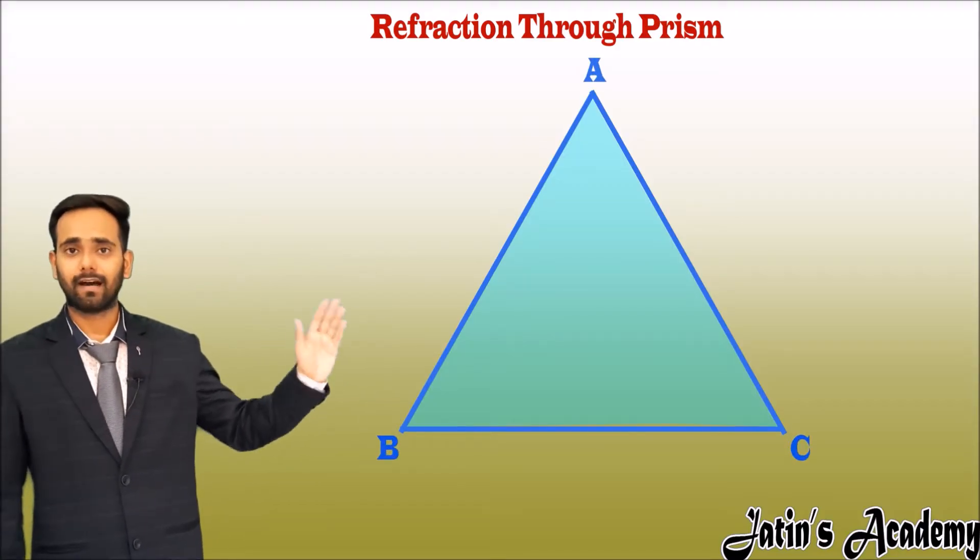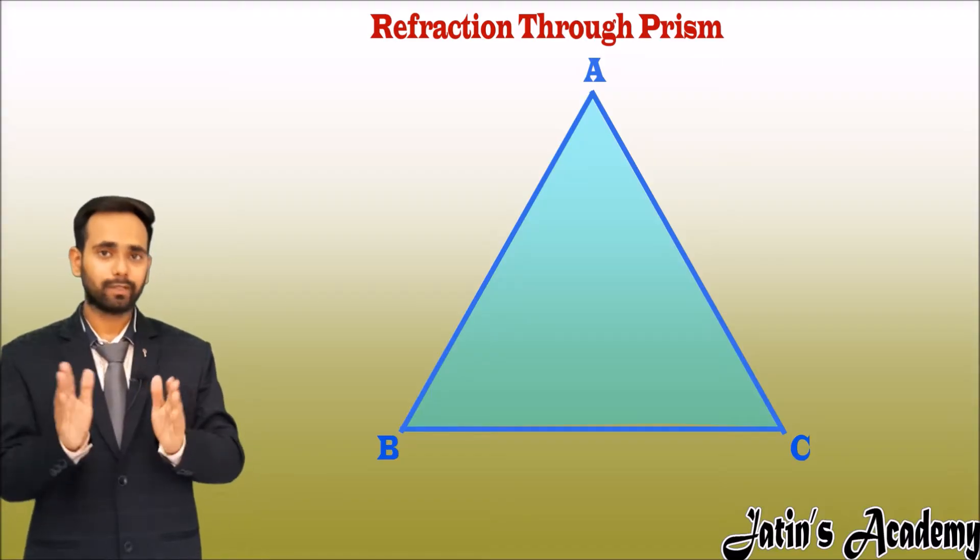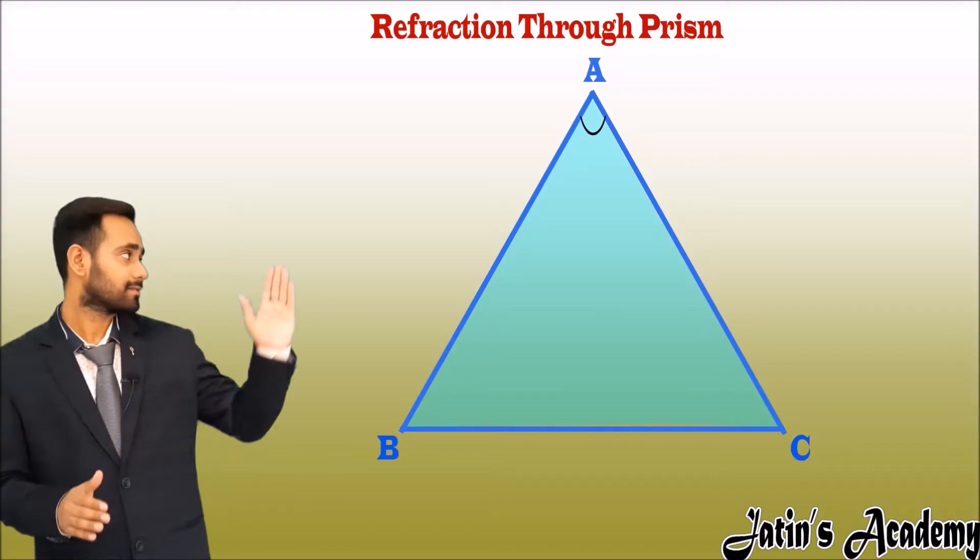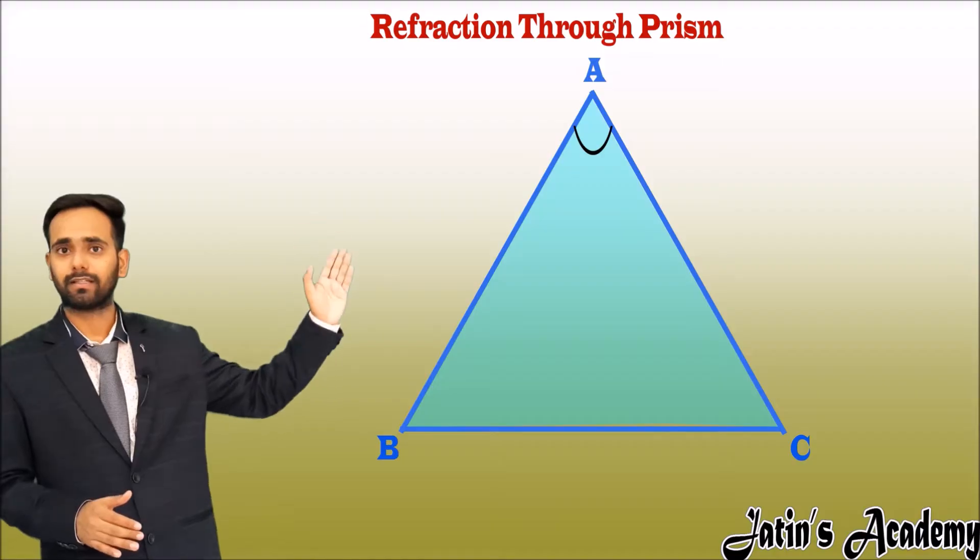AB and AC are the inclined faces and the angle between these inclined faces is A. This angle is nothing but the angle of prism.